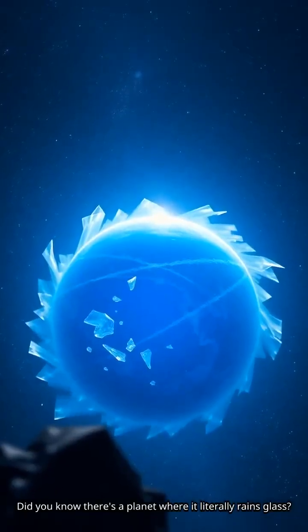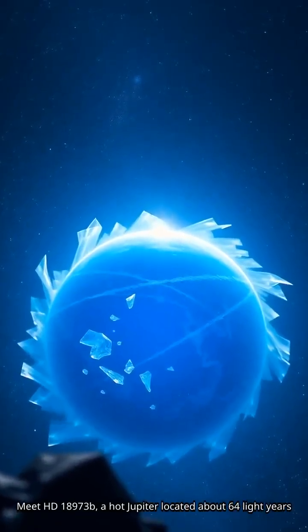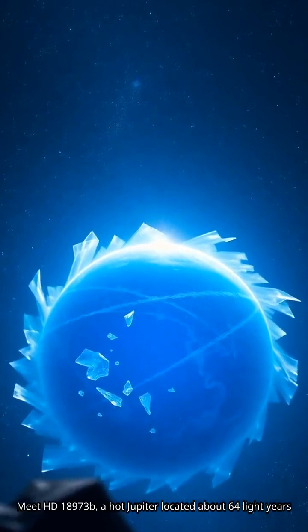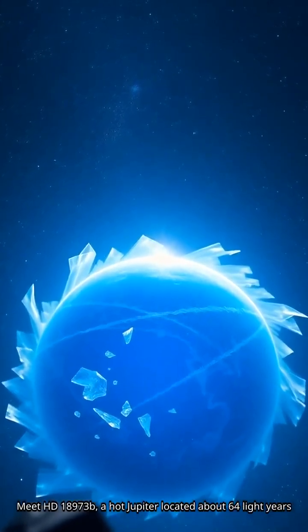Did you know there's a planet where it literally rains glass? Meet HD 18973b, a hot Jupiter located about 64 light-years away.